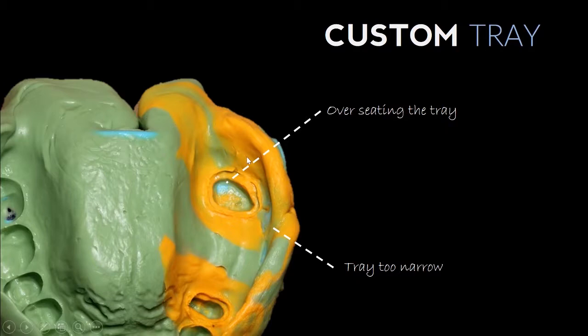At the same time, if you have an even layer of thickness of this material throughout the impression, you're going to have less distortion of your impression.